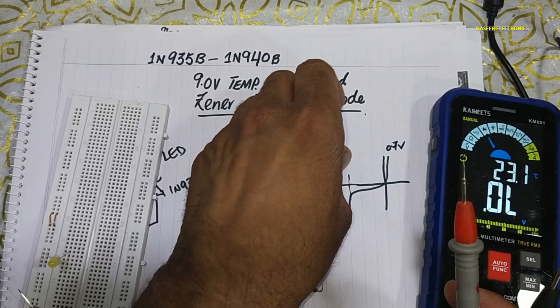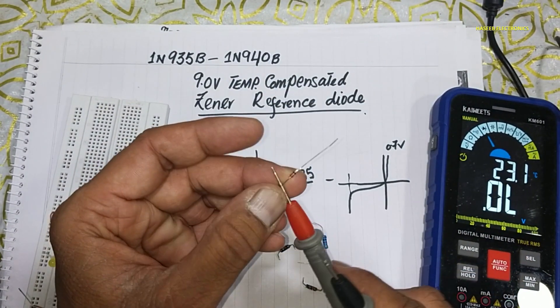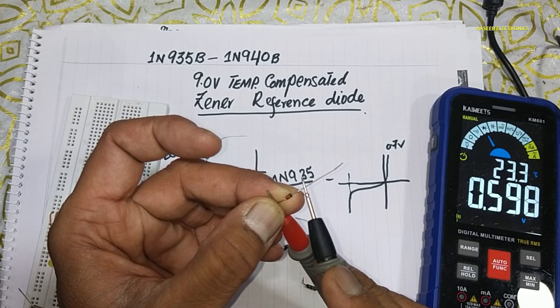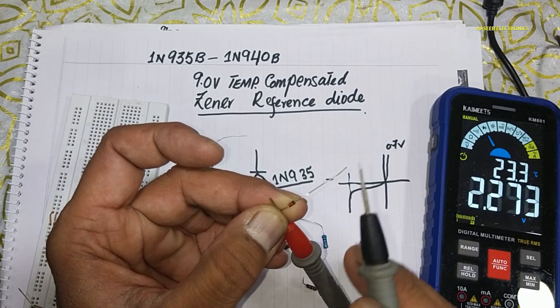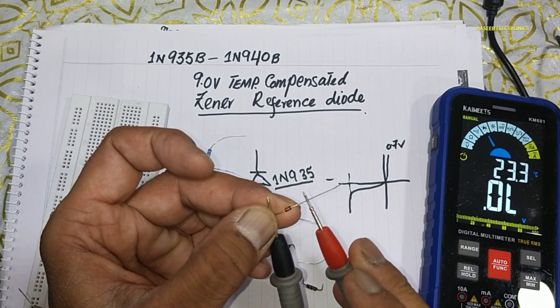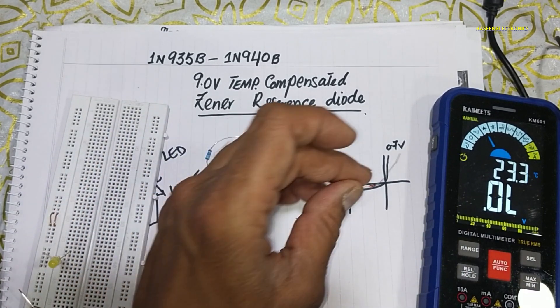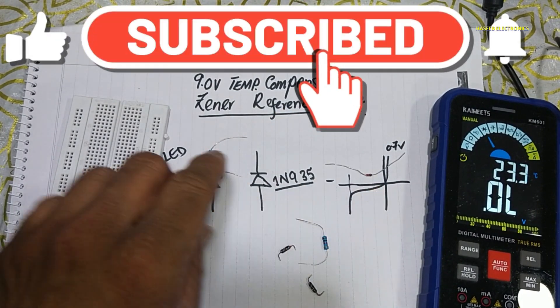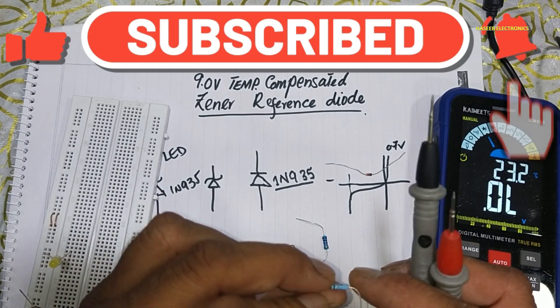If you want to test it, red lead at anode, black lead at cathode, it will show 0.6, 0.7 volts. Reverse the leads, it will show open. So this is a normal zener. But when we are discussing zener reference diode, we cannot test using multimeter.